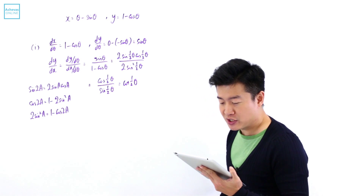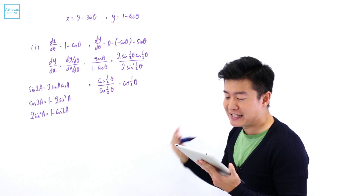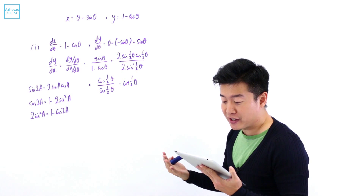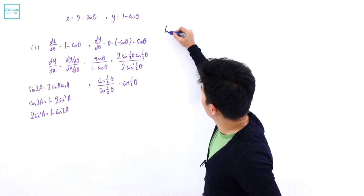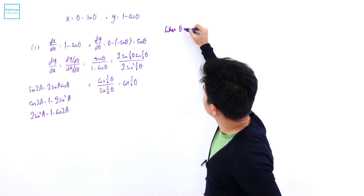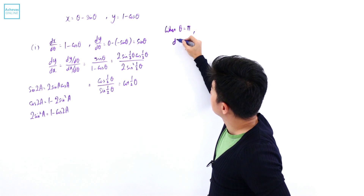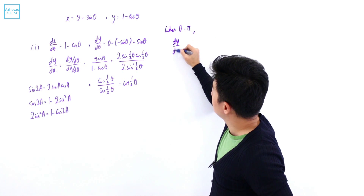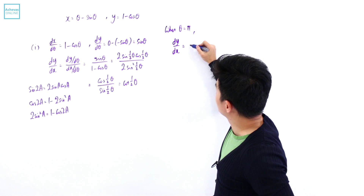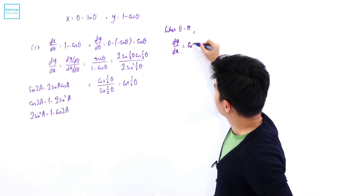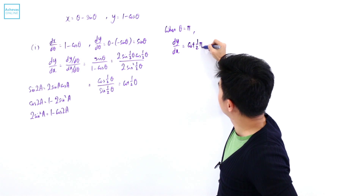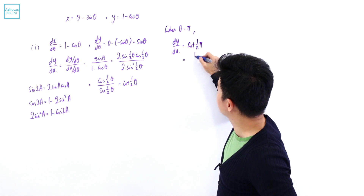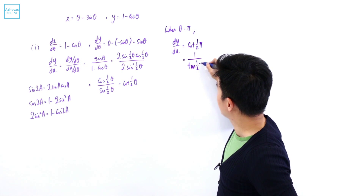Next part of the question, we want to find dy/dx — the gradient when theta is equal to pi. So when theta is equal to pi, dy/dx is equal to cotangent of half pi, which is 1 over tangent of half pi.